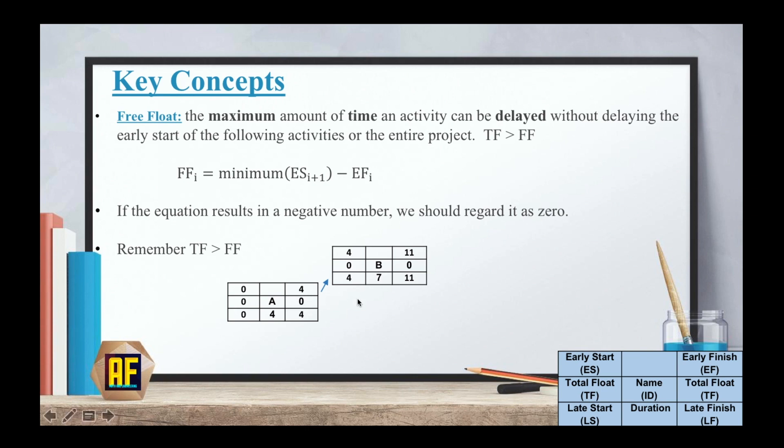So let's take an example here. We have activity A going to activity B. So let us calculate the FF of A. And by saying that the minimum ES_A+1, we are basically saying ES of B. OK, A plus 1. And translating it into numbers, the ES of B is just 4 minus the EF of A, which is again 4, gives us 0. But what do they mean with the word minimum here?